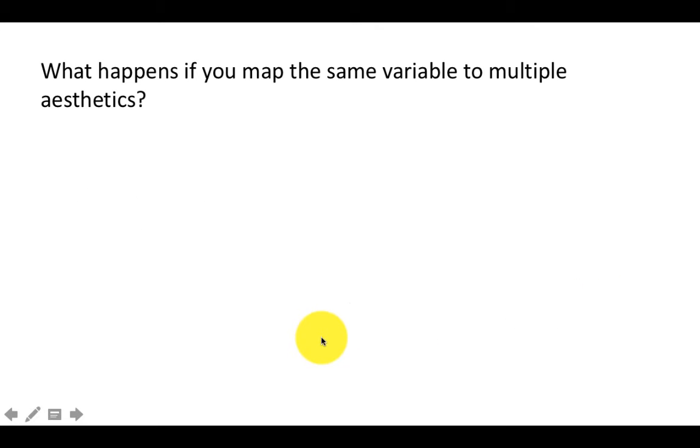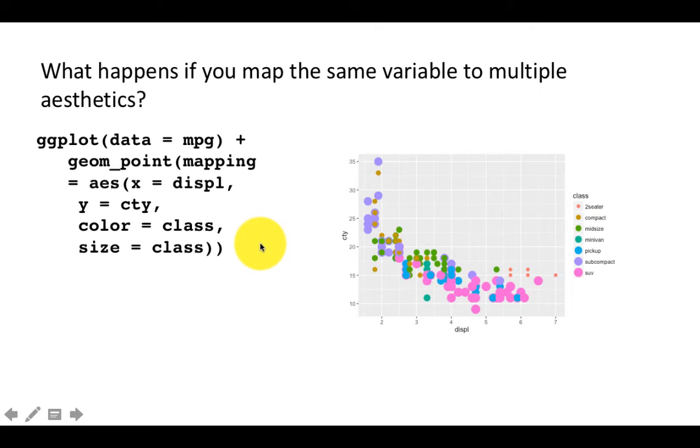It's going to generate a warning, but the key point is you can map the same variable to multiple aesthetics and it works exactly as we would expect.